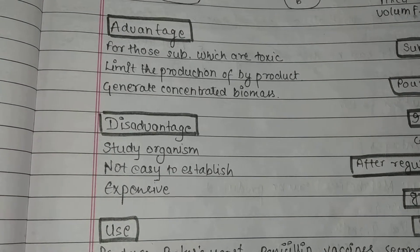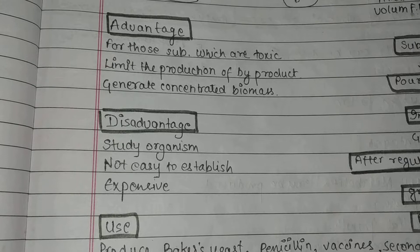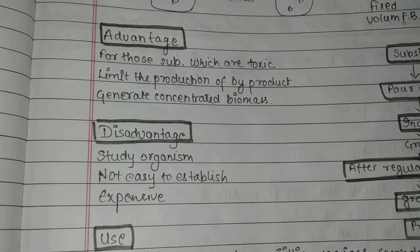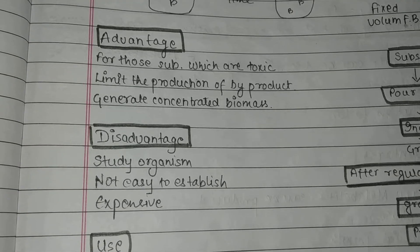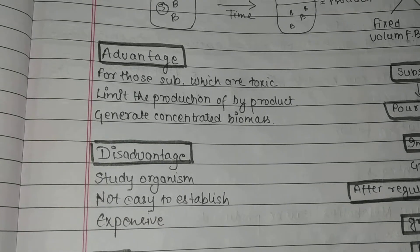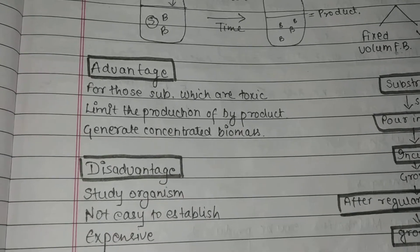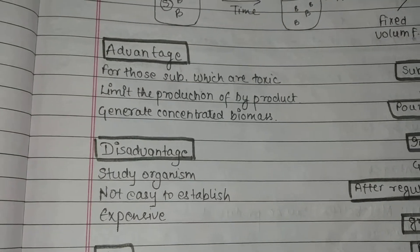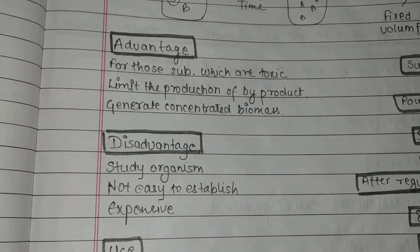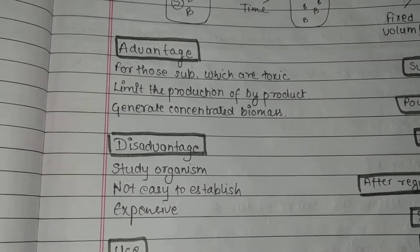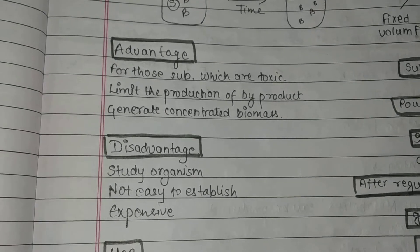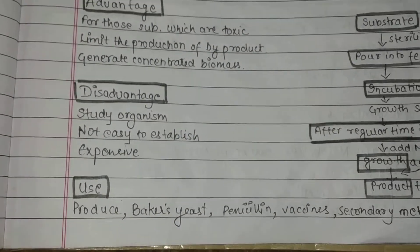Here are some disadvantages: firstly, we need to study the microorganisms we want to add in the batches, because without knowing the microorganisms well we cannot run this process at a good level. It is not easy to establish or operate — it is a difficult and complicated process, and it is expensive also.